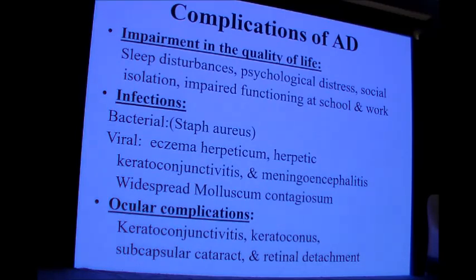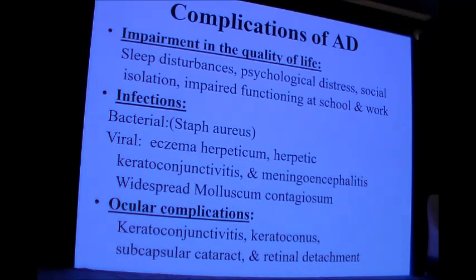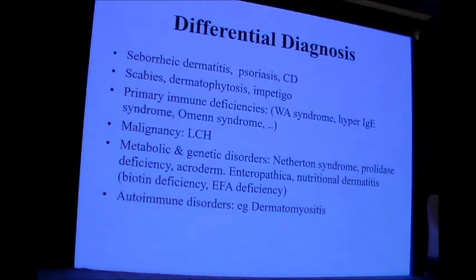Atopic patients can also be affected by herpetic keratoconjunctivitis and meningoencephalitis, and by widespread molluscum contagiosum. Ocular complications are common, including keratoconjunctivitis, keratoconus, subcapsular cataract, and up to retinal detachment.